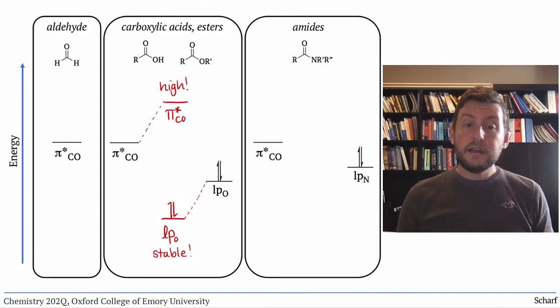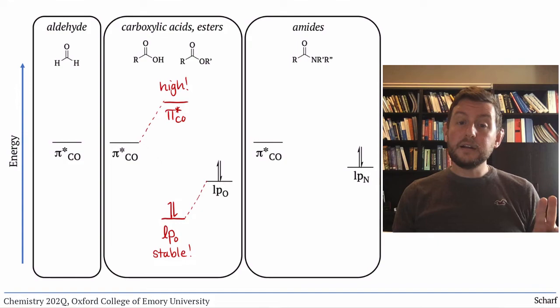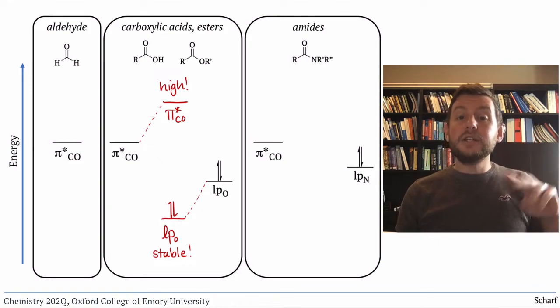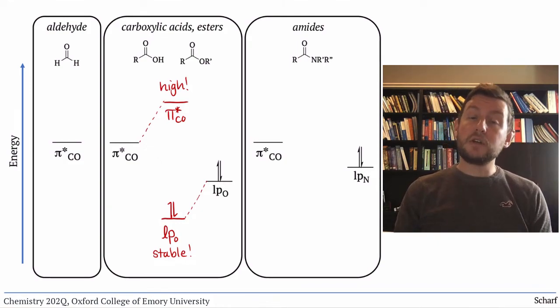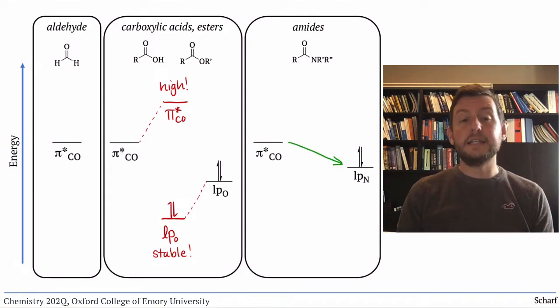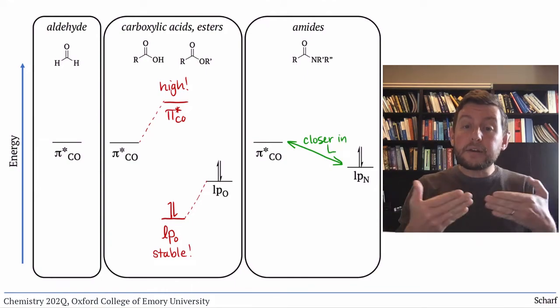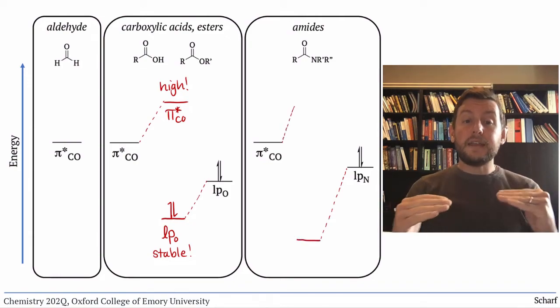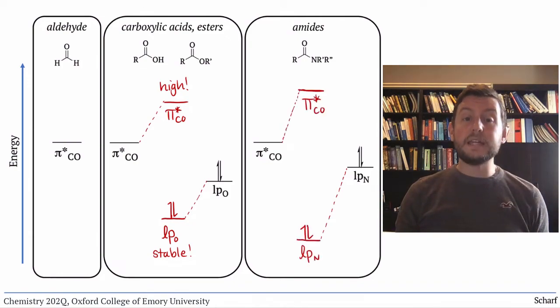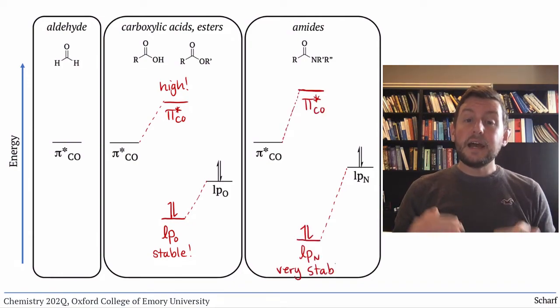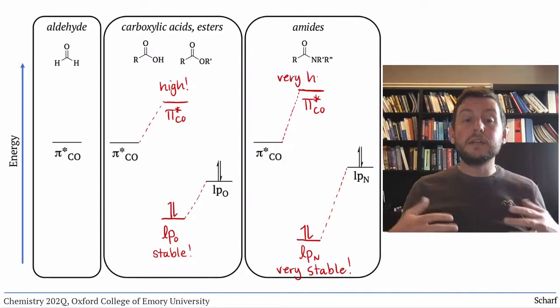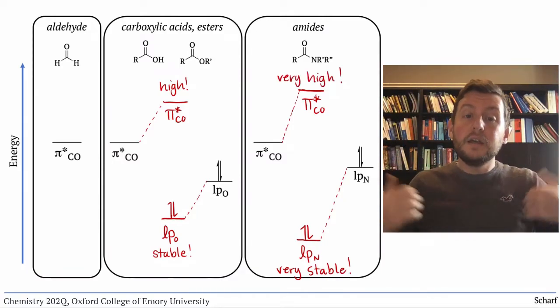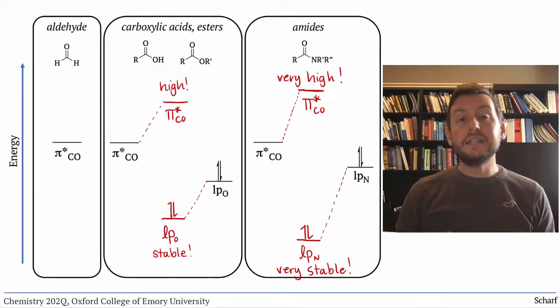For the amide, the nitrogen lone pair is higher in energy than the oxygen ones we just saw since N is less electronegative than O. So the lone pair overlaps better with CO pi star and the effect is greater. That nitrogen lone pair is quite stabilized, and the CO pi star orbital is pushed quite high in energy. So amides are the least electrophilic of all the carbonyl compounds.